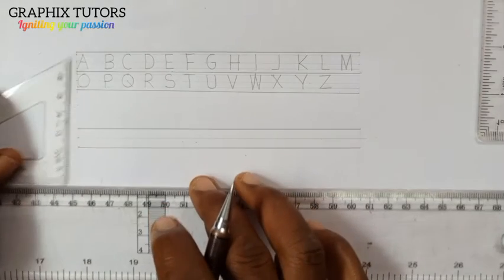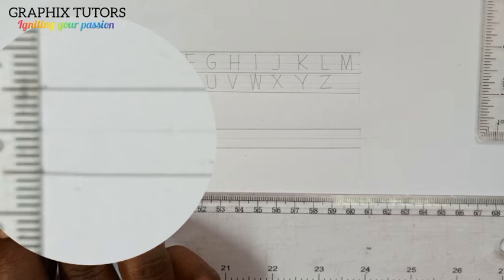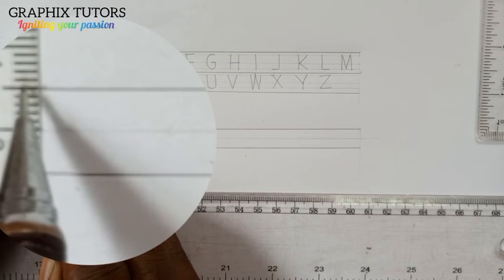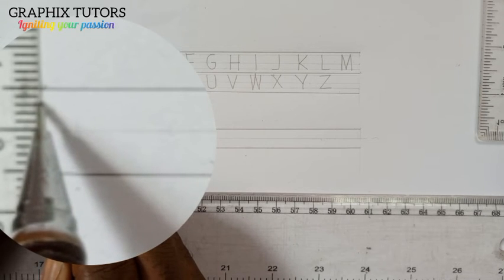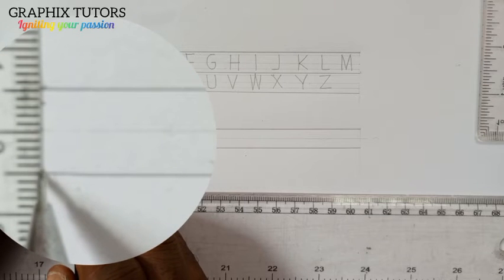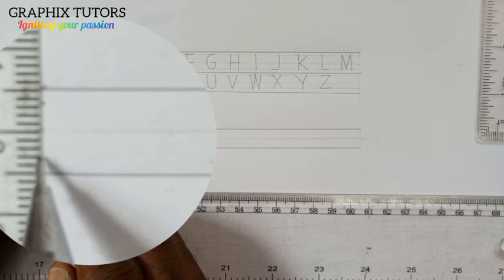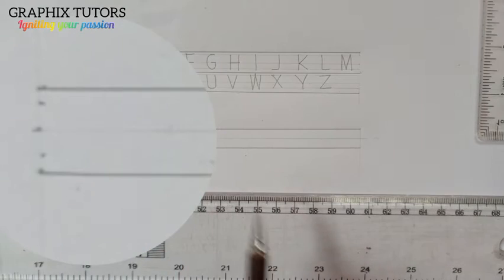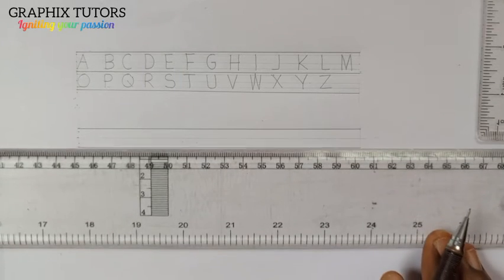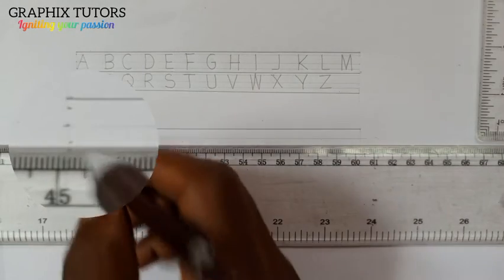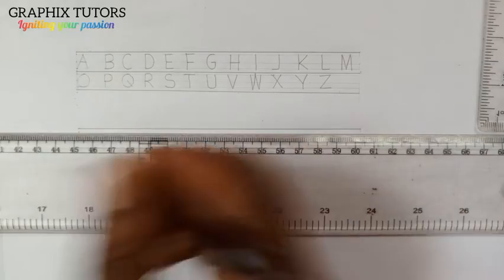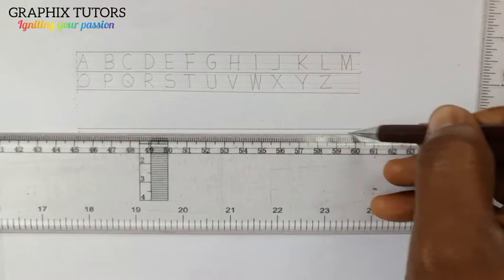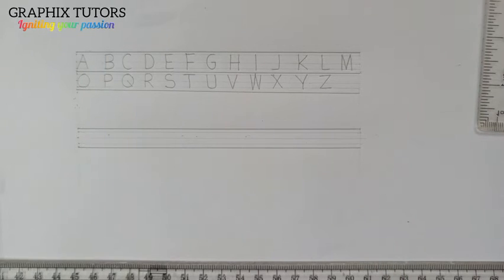I'll be using 2mm. So from this thick line here, starting from zero, I count one, two — that's 2mm. From the base line also, starting from zero: one, two. Now I'll use my T-square — it's faster and easier. From here I'll draw my faint line, then move to the next one and draw the other faint line. I have now successfully drawn out the guide lines.